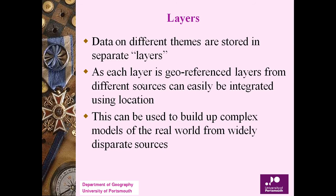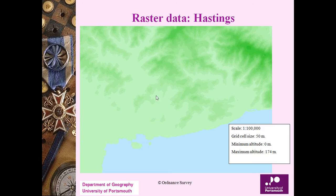There are vector layers, annotation layers, and various other layers. Data on different themes are stored in separate layers. Since each layer is georeferenced, layers from different sources can easily be integrated using location. This can be used to build complex models of the real world from widely disparate sources — you can stack different information together in the form of layers.